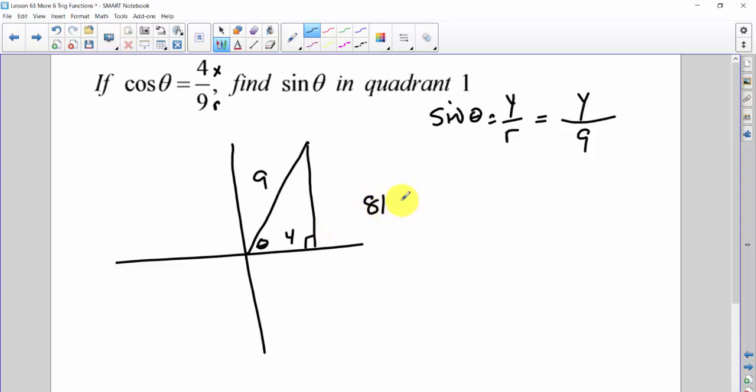And I just need the y value, which is a Pythagorean, right? So I have 81 is equal to 16 plus y squared. Subtract that. It's 65 is equal to y squared. Square root both sides. And root 65 is equal to y. Therefore, root 65 over 9 is equal to the sine of theta.